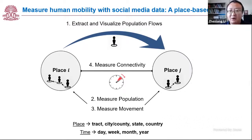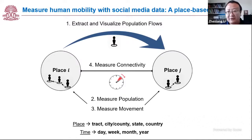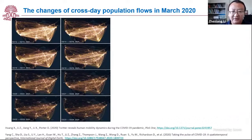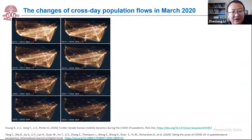This is the overall place-based view diagram showing how we guide our study to measure human movement using Twitter data. Due to time constraints I won't go into detail about the methods, but we do have publications linked on each slide. This visualization shows us the changes of cross-state population flows in March 2020.